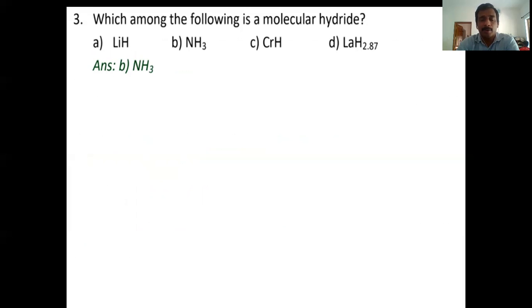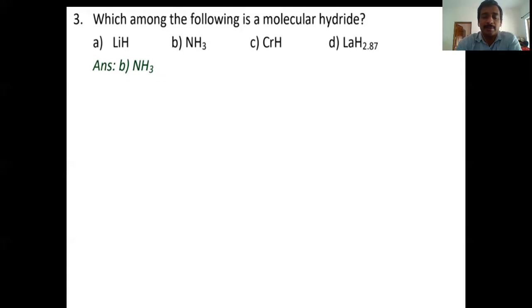A number of hydrides are given. LiH is an ionic hydride. NH3 is a molecular hydride. CrH is an interstitial hydride. LiH2.87 is also an interstitial hydride. So the answer is NH3. Molecular hydrides are of three types: electron-rich hydride, electron-deficient hydride, and electron-precise hydride.